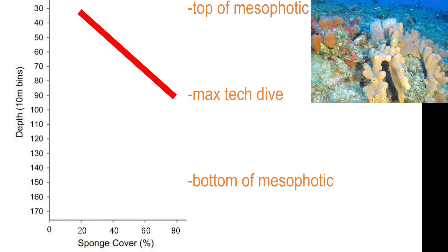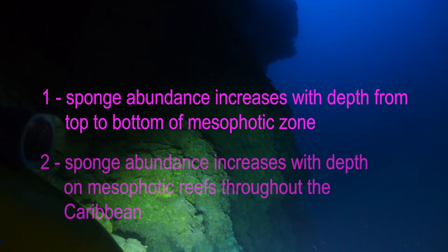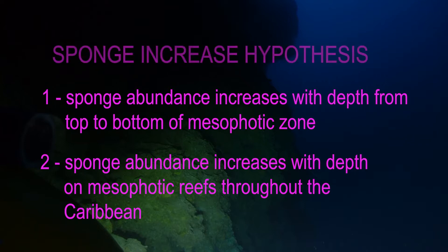The Tech Diving Group went on to make two interesting claims. First, that sponge abundance continued to increase deeper into and to the bottom of the mesophotic zone — meaning sponge abundance continues to increase above 80% cover in the deepest half of the mesophotic to 150 meters, at depths that they didn't survey. Second, they claimed that this increase in sponge abundance happens on all mesophotic reefs in the Caribbean, again on reefs that they didn't survey. Together, the hypothesis the Tech Diving Group put forward is called the sponge increase hypothesis for mesophotic reefs.